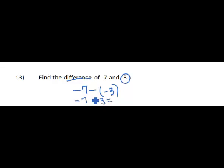They are different signs, so the rule is when they are different signs, you subtract the smaller from the larger. So 7 subtract 3 is 4.